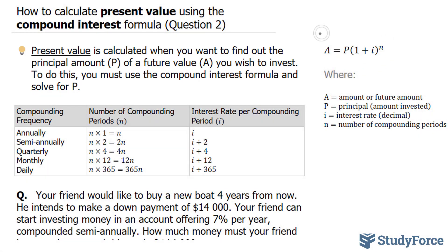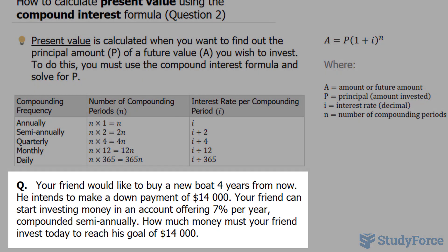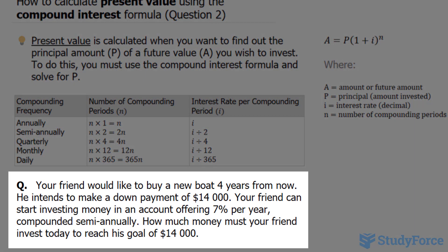Right here is the compound interest formula and our target is P. The question asks: your friend would like to buy a new boat 4 years from now. He intends to make a down payment of $14,000. Your friend can start investing money in an account offering 7% per year, compounded semi-annually. How much money must your friend invest today to reach his goal of $14,000?